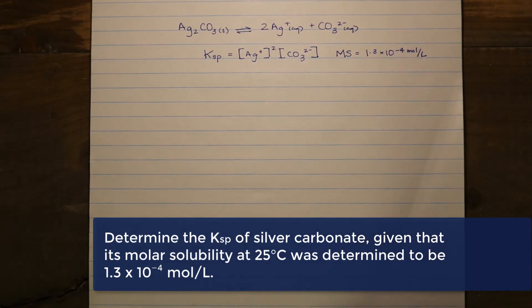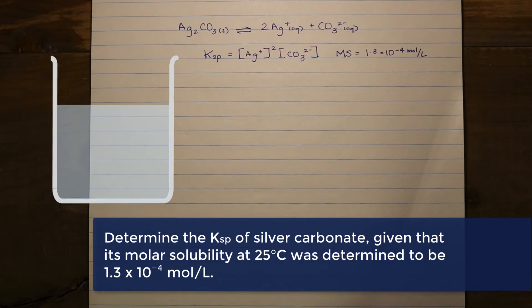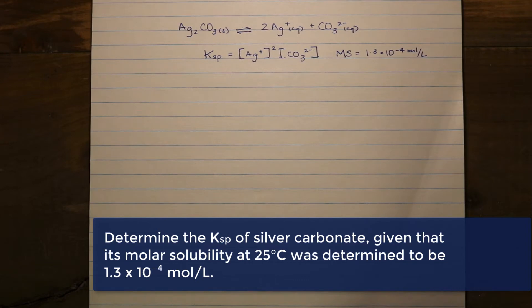If we understand the relationship between the two silver ions and the carbonate ion in conjunction with our silver carbonate, we understand that for every mole of the silver carbonate that dissociates, we're going to get two moles of silver ions and one mole of carbonate. Which means if we know the maximum solubility or the molar solubility in this particular solution at this particular temperature, then we understand what relationship that's going to have to the two ions.